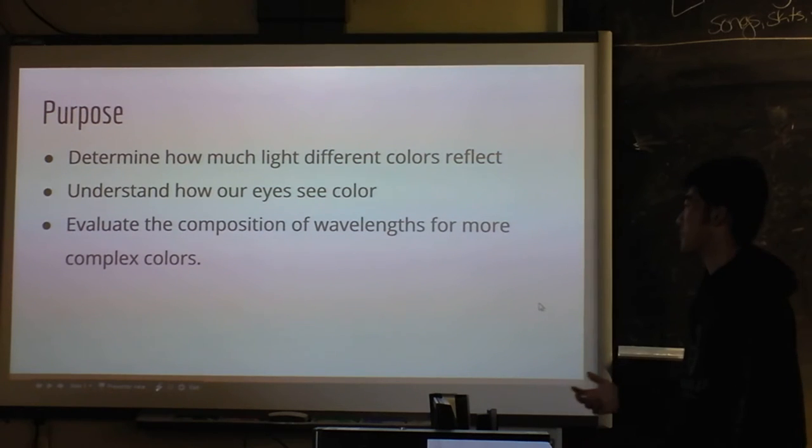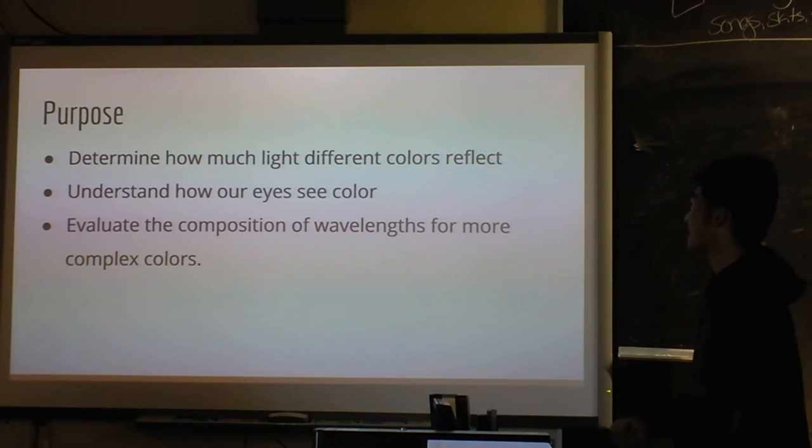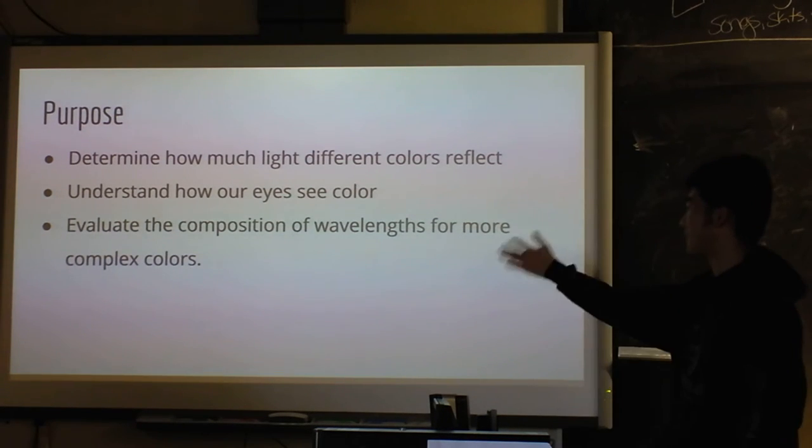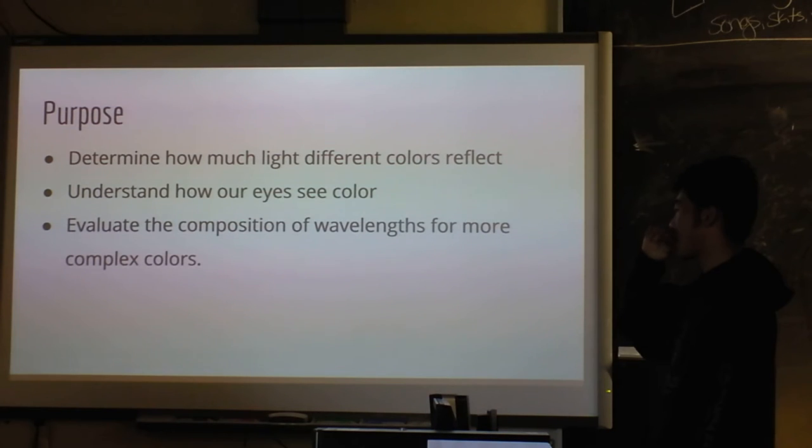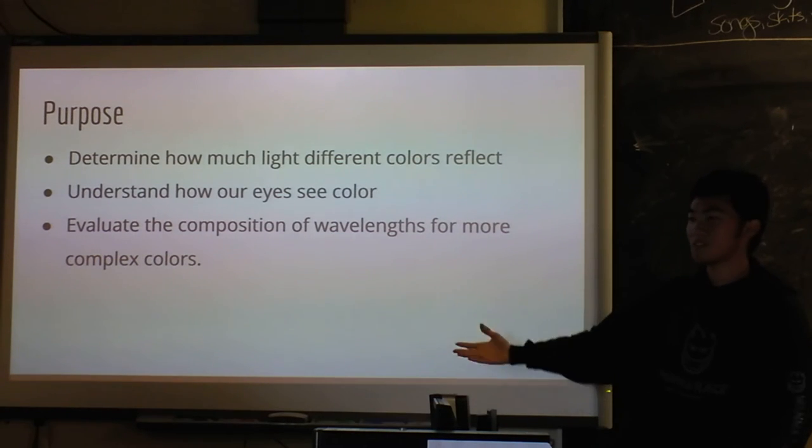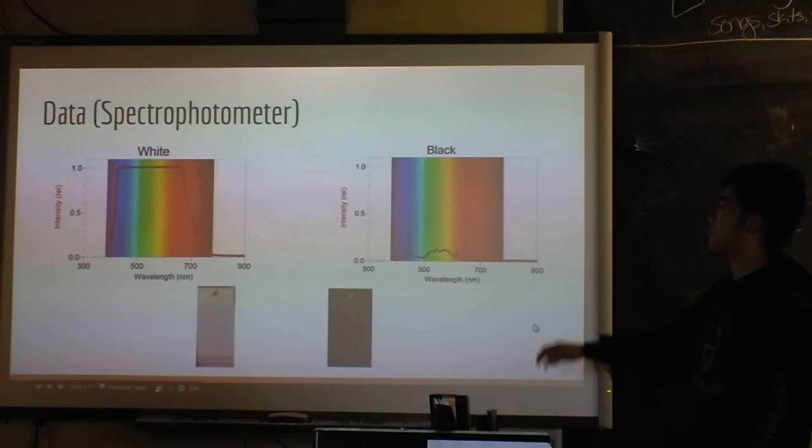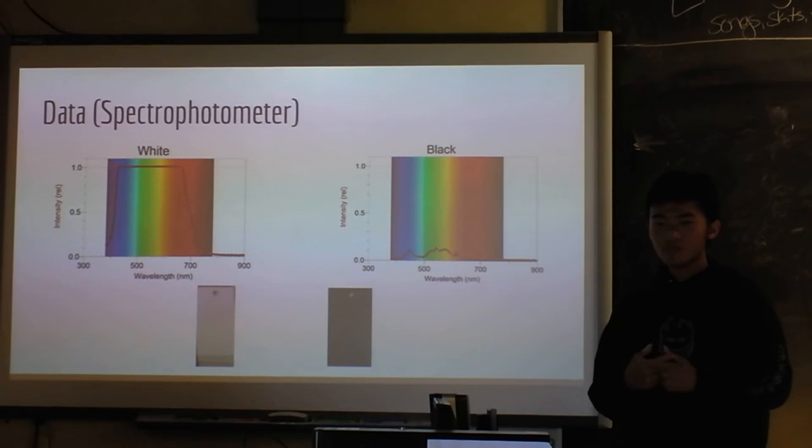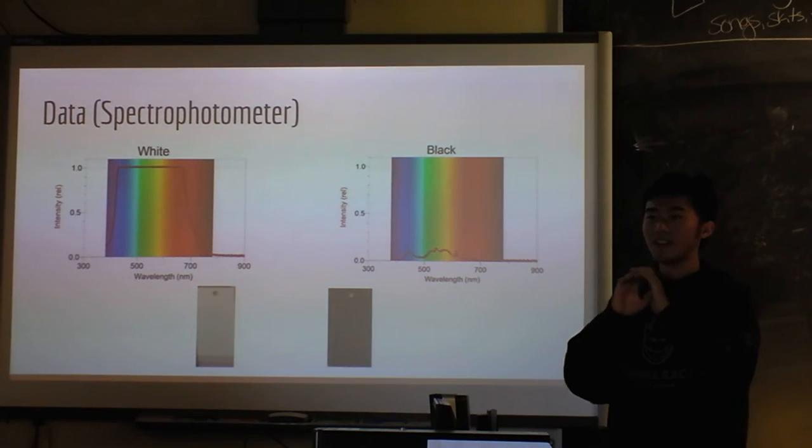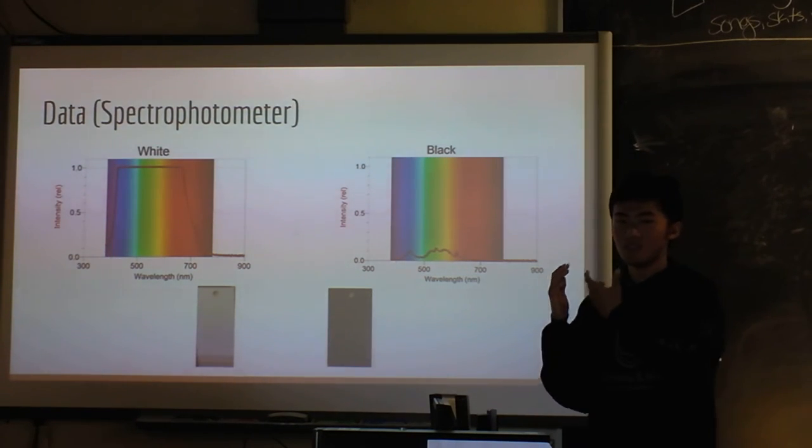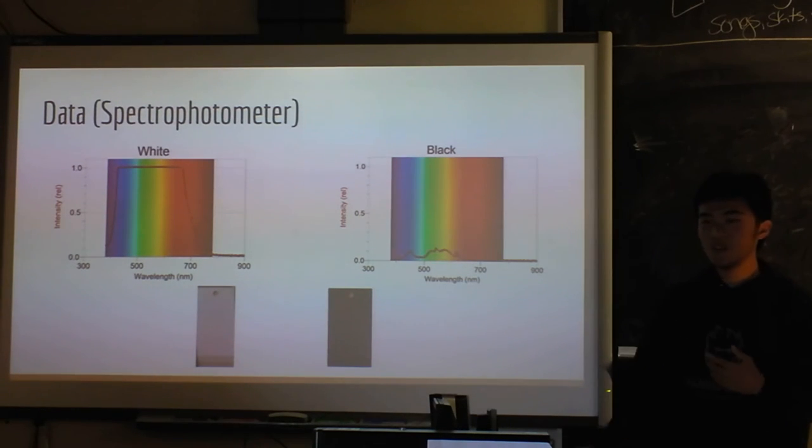So our lab purpose is to determine how much light different colors reflect, and to understand how our eyes see color and different wavelengths for more complex colors. Since our hypothesis is totally wrong, we were kind of disappointed. Our hypothesis is that if we shoot white light onto a color, it will reflect the same light with the same wavelengths of the color itself.